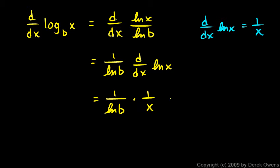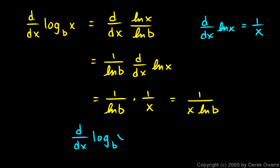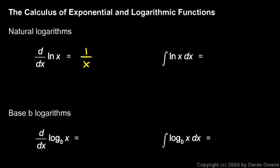That is commonly written as 1 over (x · ln b). So the derivative with respect to x of log base b of x equals 1 over (x · ln b). Let's come back to the reference page and fill that in: the derivative of log base b of x is 1 over x times the natural log of b.